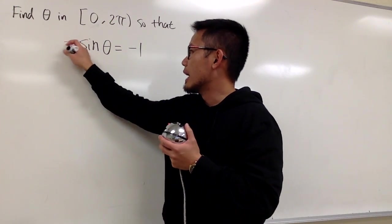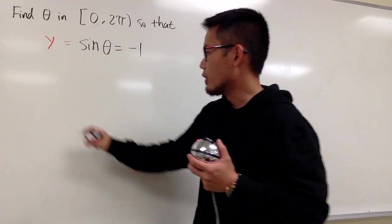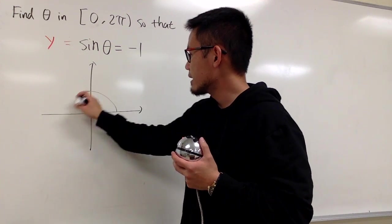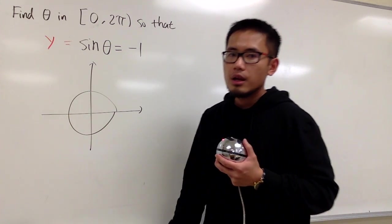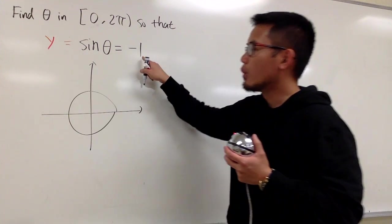What I mean is that I know on the unit circle for sine, it's just the y value. So what I'm going to do is draw my circle real quick like this and ask myself, where is the y value equal to negative 1?